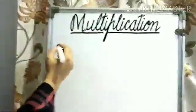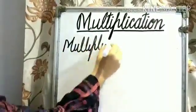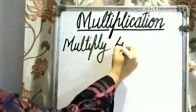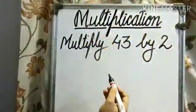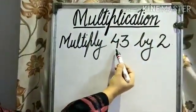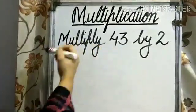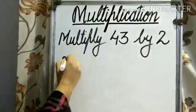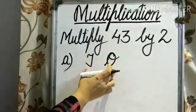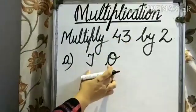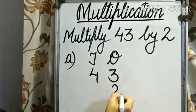Our first example is multiply 43 by 2. First of all, we have to arrange this number under 1's and 10's column and then we have to start multiplying. So first of all, we need to write the headings. Now arrange this number under these columns. 43 multiply by 2.